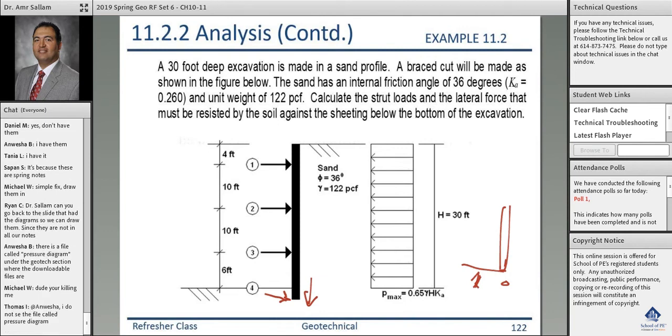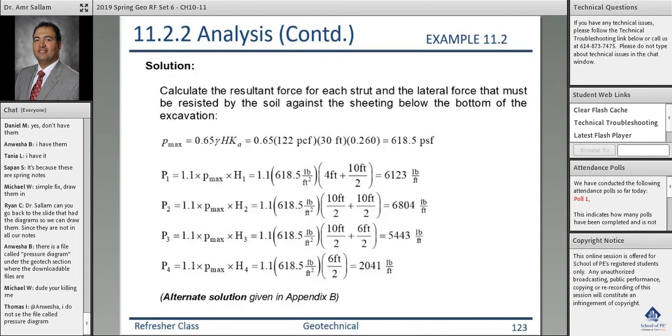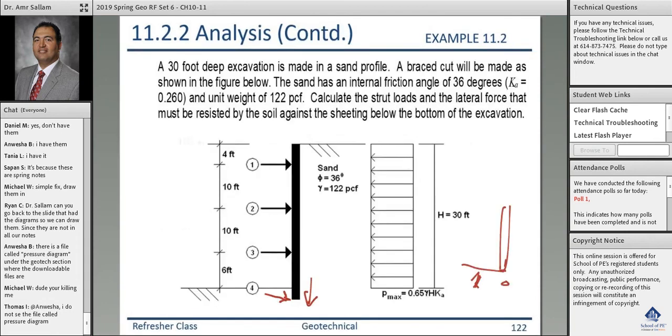How much is this pressure? 0.65 gamma H K_active, which is about 618.5 PSF per foot.